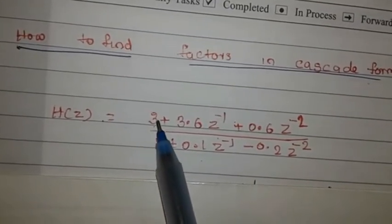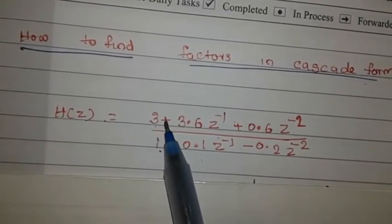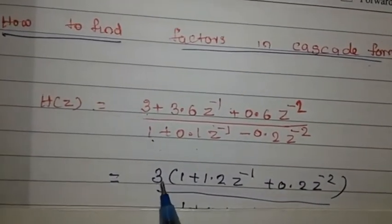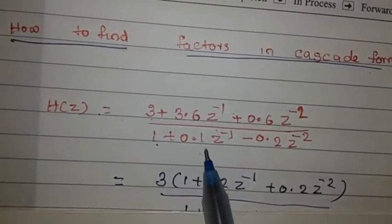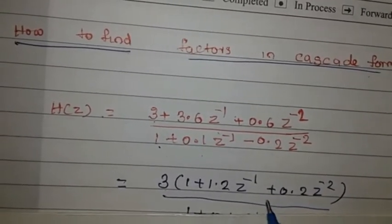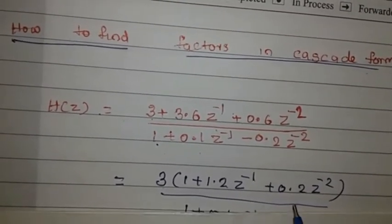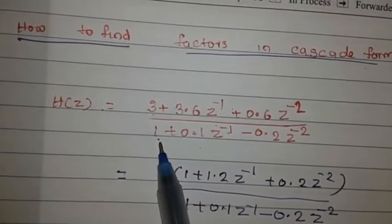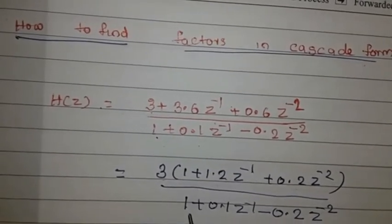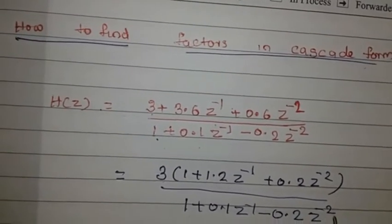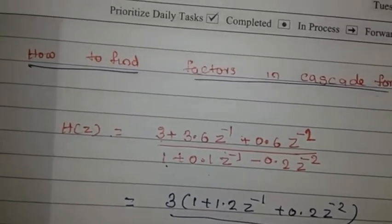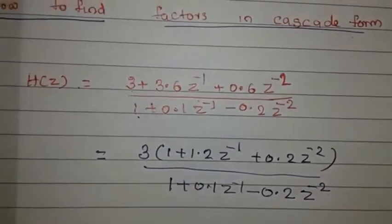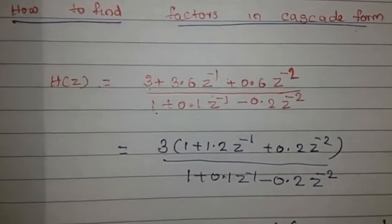In this case, the numerator is 3. If we factor out the 3, then we factor on the outside: 1 plus 1.2 Z-inverse plus 0.2 Z-inverse-2, divided by the denominator. The constant is 1, then 1 plus 0.1 Z-inverse minus 0.2 Z-inverse-2. Like that, let's say the numerator and denominator actually factor.